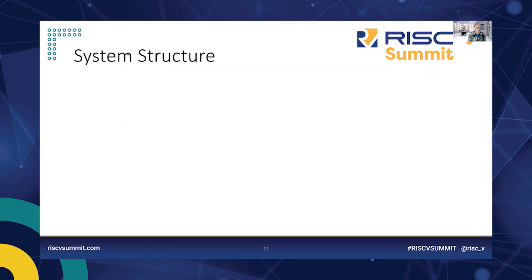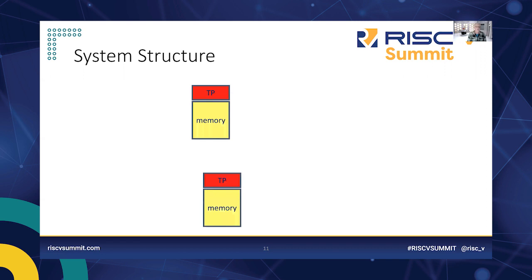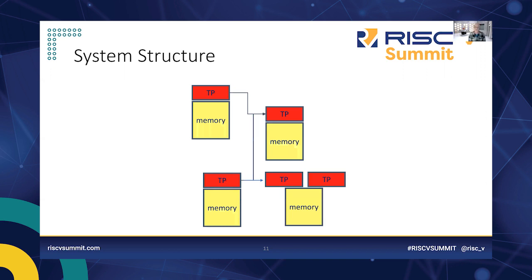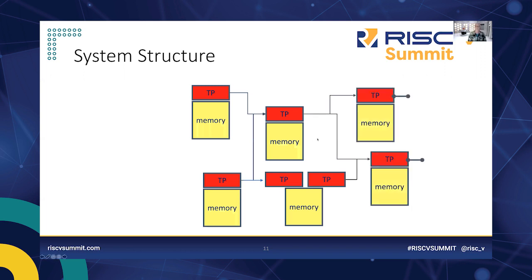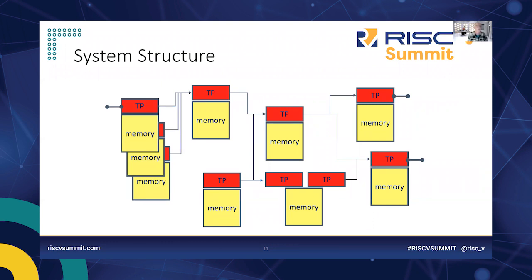What would a system look like in general terms? We'd have a thread processor with some memory, and another one connected to a third, which connects to others. Some processors can share memory. They're all connected to additional thread processors that interface with the outside world. This looks very much like a diagram you'd draw when designing a multi-threaded software application — simply showing how tasks are connected and defining their functionality.